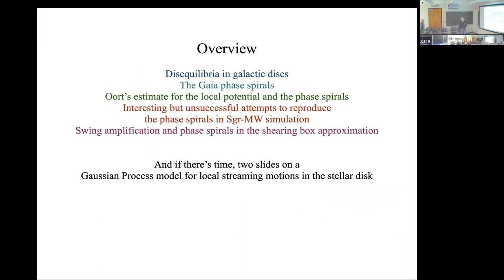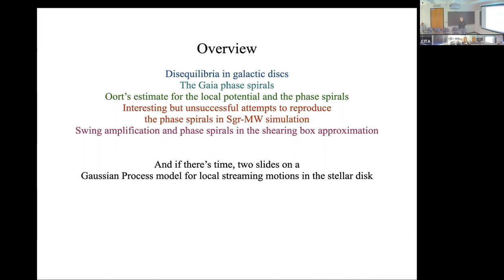Before we get there, I'll first begin with a review of disequilibrium in galactic disks — an overview — then talk about the Gaia phase spirals or the Gaia snail as it's sometimes called. I'll describe some work on Oort's estimate for the local gravitational potential and its connection with phase spirals, describe some interesting but unsuccessful attempts to reproduce the phase spirals in Sagittarius and Milky Way simulations, and then talk about new work on swing amplification and phase spirals in the shearing box approximation.